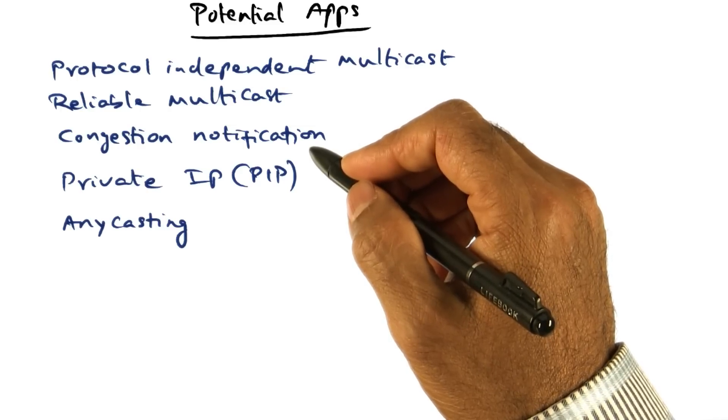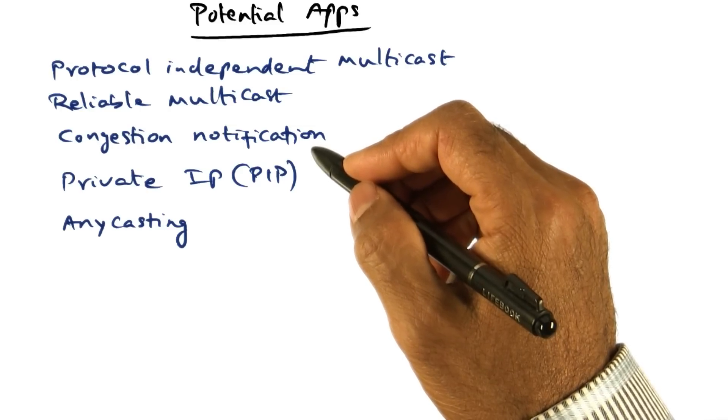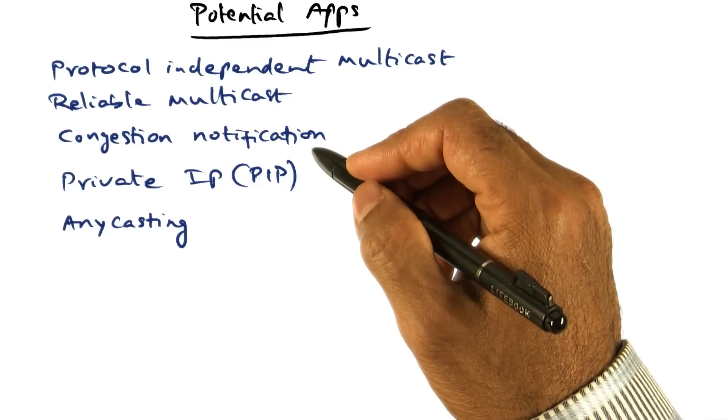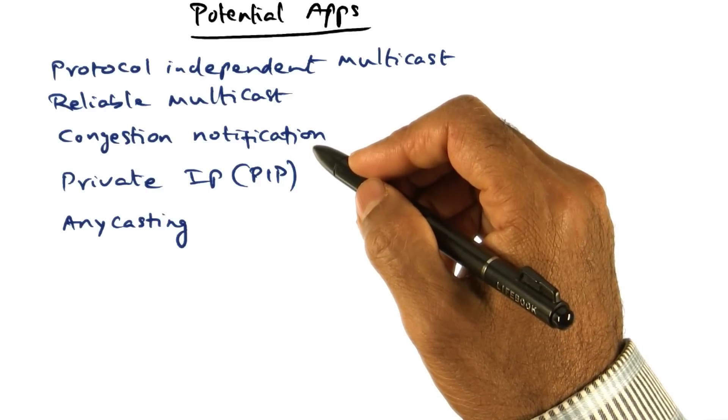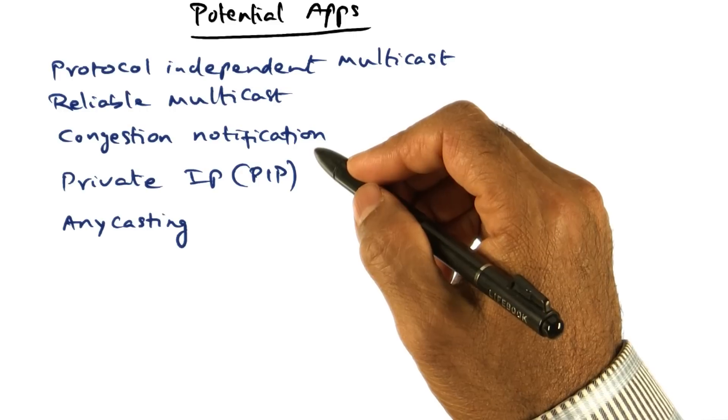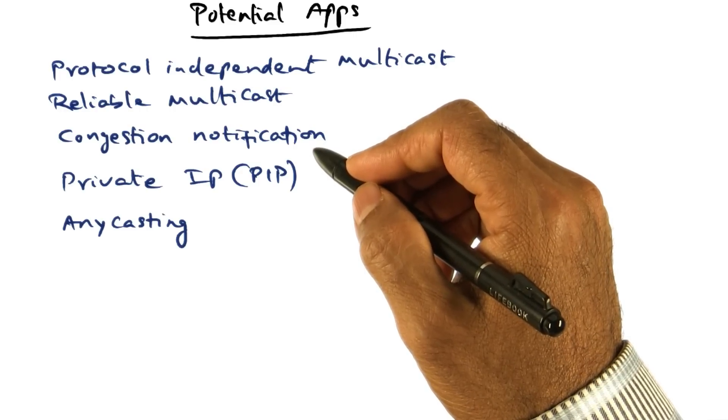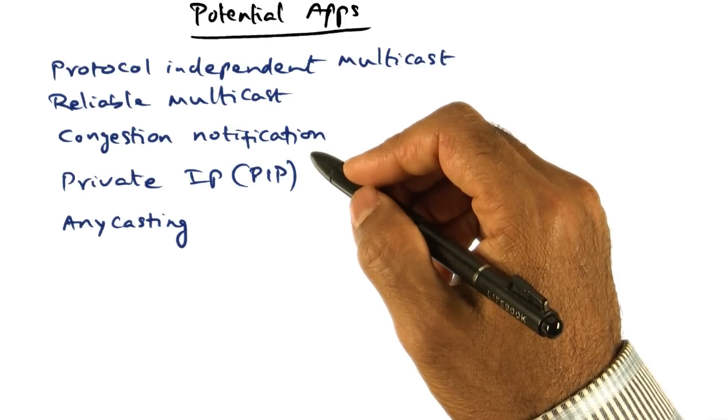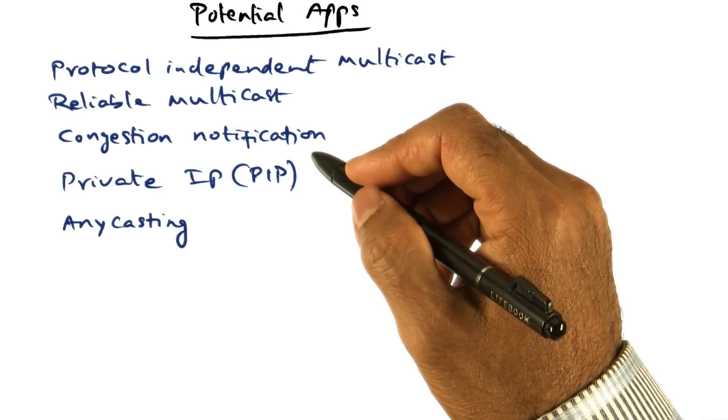These are key things to note in building applications on top of active networks. All of these suggest, once again, that it is for providing network layer functionality, not end application functionality. What you want in the network layer is something you can orchestrate using the active networks paradigm.